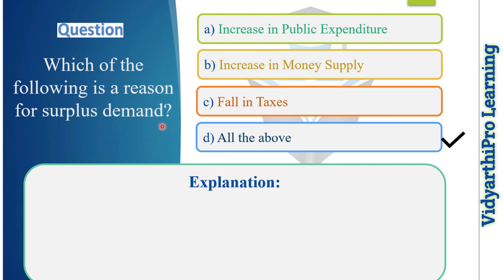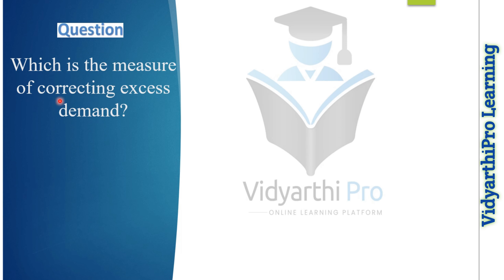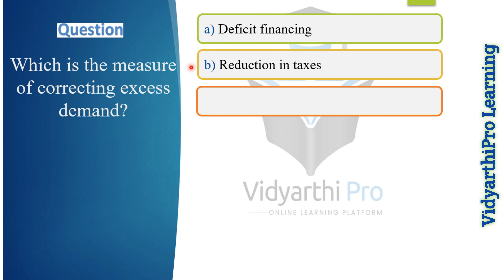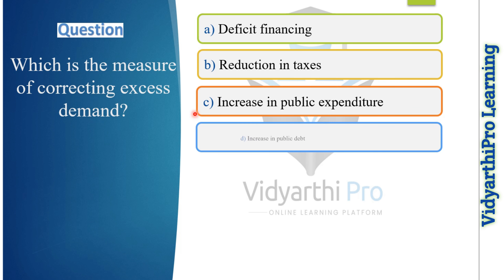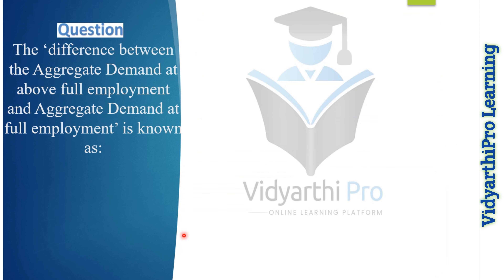Surplus demand occurs when the consumer's willingness to pay for a product is greater than its market price. Our next question: which is the measure of correcting excess demand? Options: deficit financing, reduction in taxes, increase in public expenditure, or increase in public debt. The correct answer is option D, increase in public debt, because fiscal policy measures to reduce excess demand include a cut in government expenditure, increase in public debt, and increase in taxes.